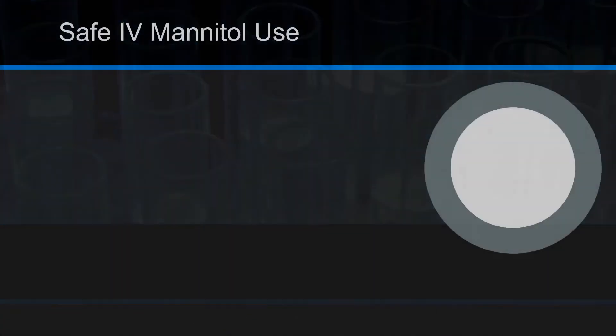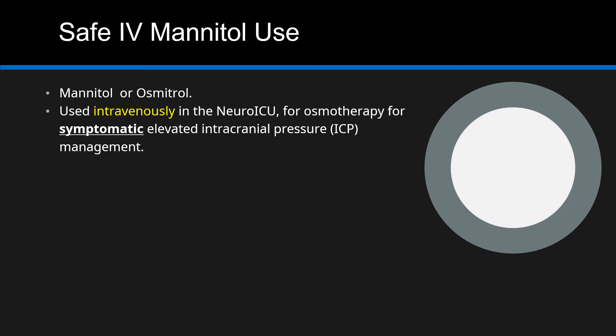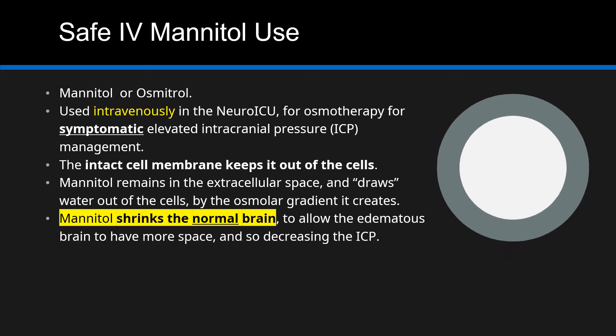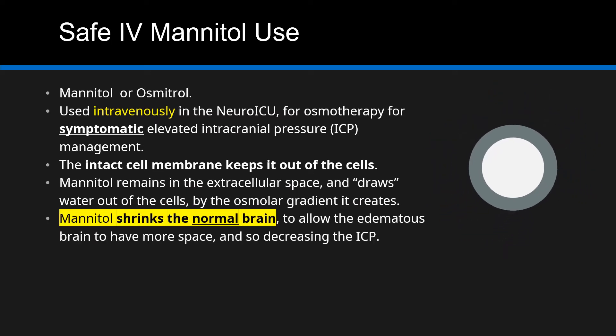Mannitol. In the neuro ICU, mannitol is used for induction of hyperosmotherapy for management of symptomatic elevated intracranial pressure or ICP. Mannitol stays out of the normal cells, drawing water out of the cells and shrinks the normal brain to allow the edematous brain to have more space, and so decreases the ICP.